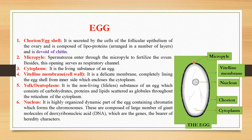On the anterior or top side of this typical egg, you can see a single hole called the micropyle. The spermatozoa enter through the micropyle to fertilize the ovum. Besides this use, the micropyle can also serve as a respiratory channel. The third component is cytoplasm — it is the living substance of the egg, with the nucleus floating inside it. Then there is the vitelline membrane or cell wall, which is a delicate membrane completely lining the egg shell from the inner side, enclosing the cytoplasm.